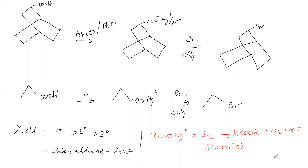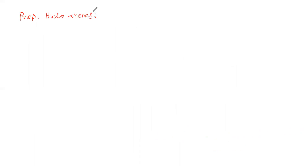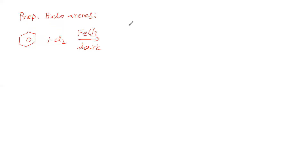Next we go to the preparation of Haloarines (aryl halides). We take benzene and treat it with Chlorine in the presence of FeCl3 as the halogen carrier under dark conditions. The product is Chlorobenzene plus HCl.